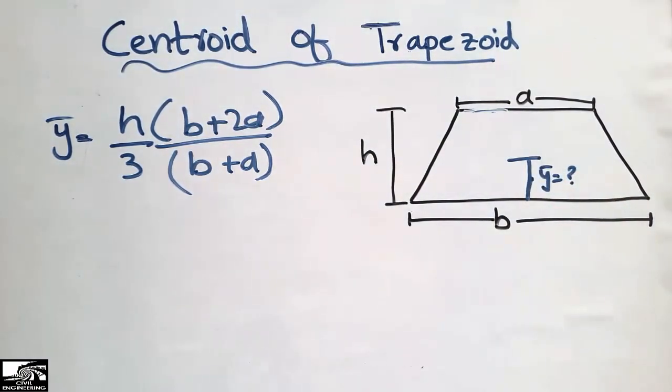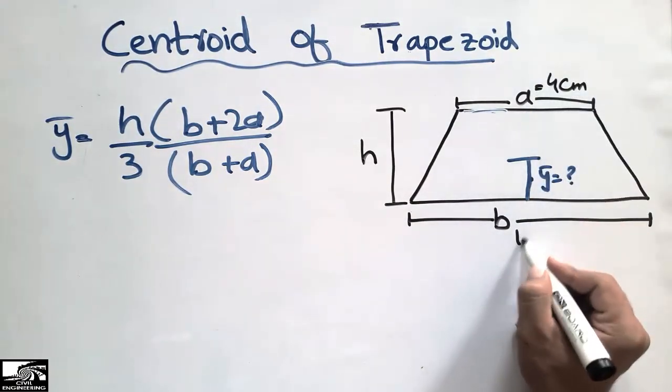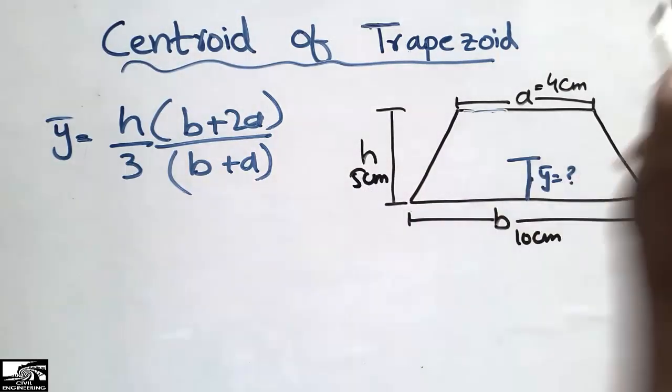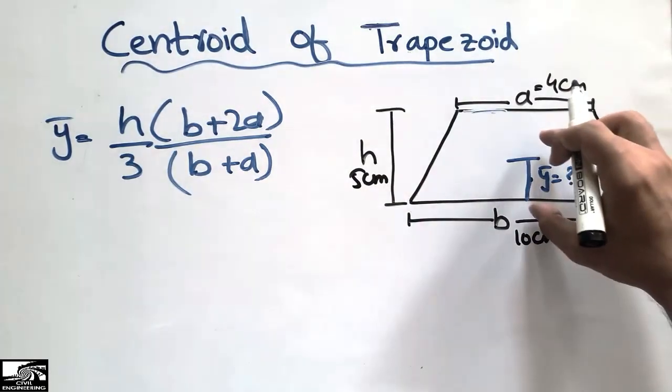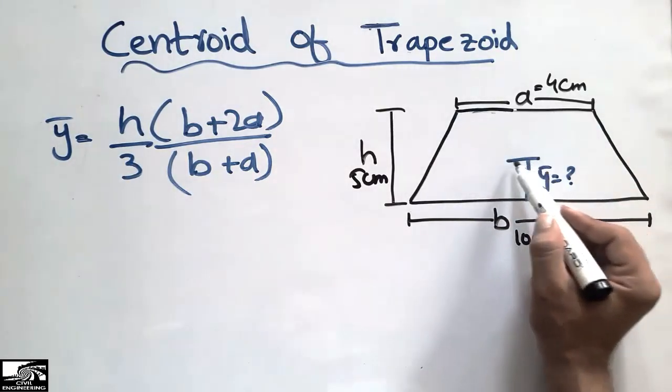Let's consider one example: a is 4 cm, b is 10 cm, and height is 5 cm. We are interested in finding at what distance the centroid of this trapezoid is located.